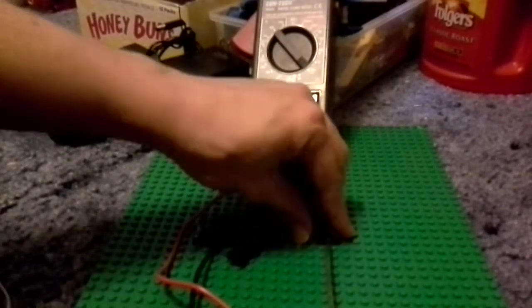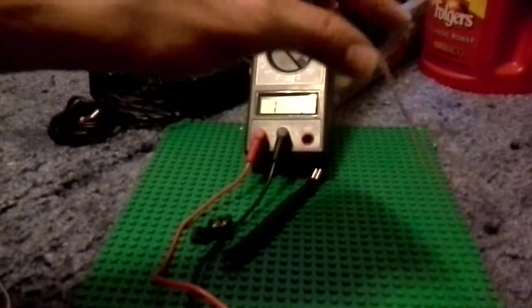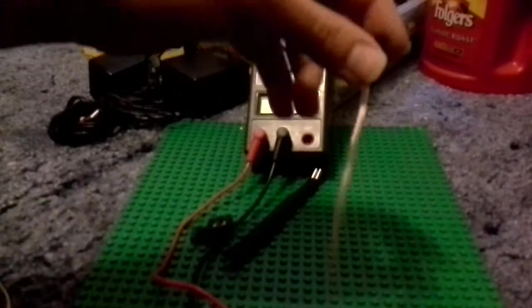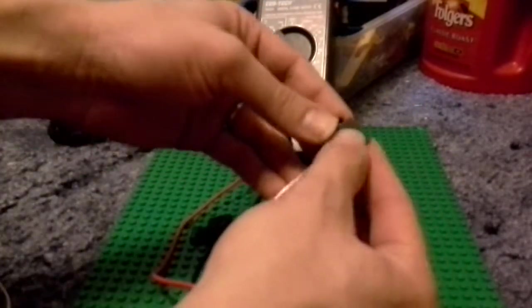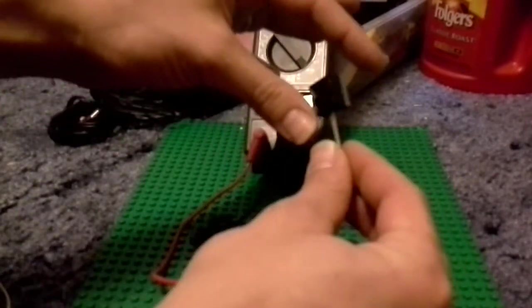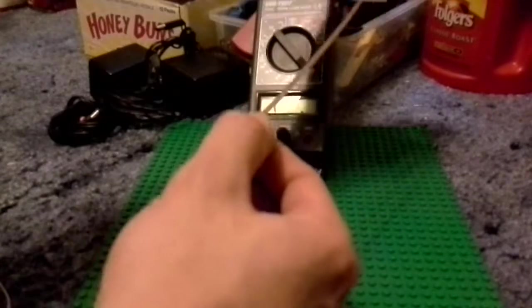Once you get it down and you've got some practice done, you can get it done in one swoop like that. I know this side is good. What I'll do from there—I'll just take a piece of Lego, anything, to mark that side. Because this is the side I just done. It's good. There's no short. It's got continuity on both sides.